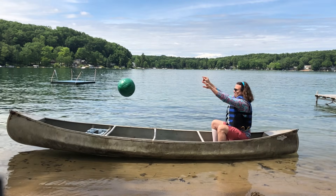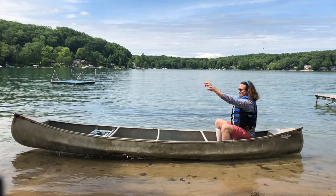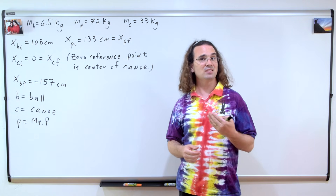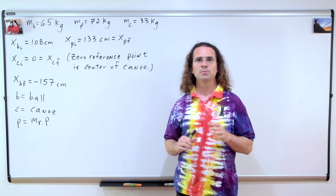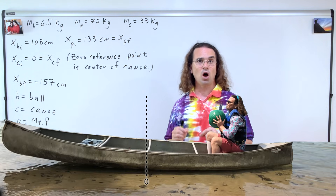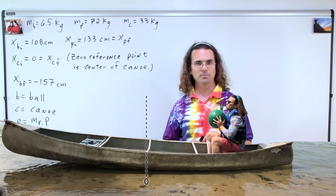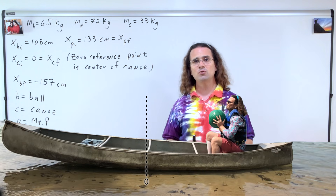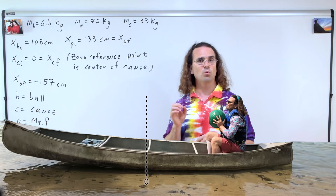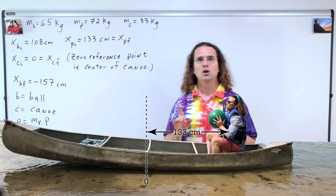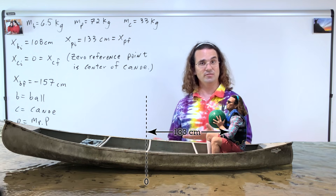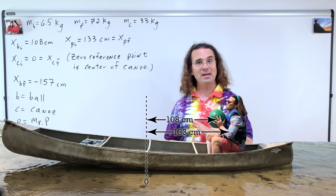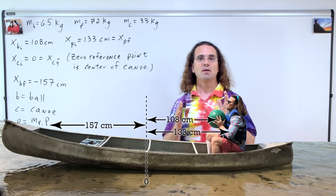Now, let's go back to the ball landing in the canoe and actually calculate how far the canoe and I move. Let's define some known values. The mass of the ball is 6.5 kilograms. The mass of Mr. P is 72 kilograms. The mass of the canoe is 33 kilograms. We have set the x position zero location at the center of the canoe, so all x position measurements will be relative to the center of the canoe. We are not concerning ourselves with the y position center of mass because we are only discussing horizontal movements in this example. Because I do not move relative to the canoe, the initial and final positions of Mr. P are both 133 centimeters to the right of the center of the canoe. Both the initial and final positions of the canoe are zero. The initial position of the ball is 108 centimeters to the right and the final position of the ball is 157 centimeters to the left of the center of the canoe.